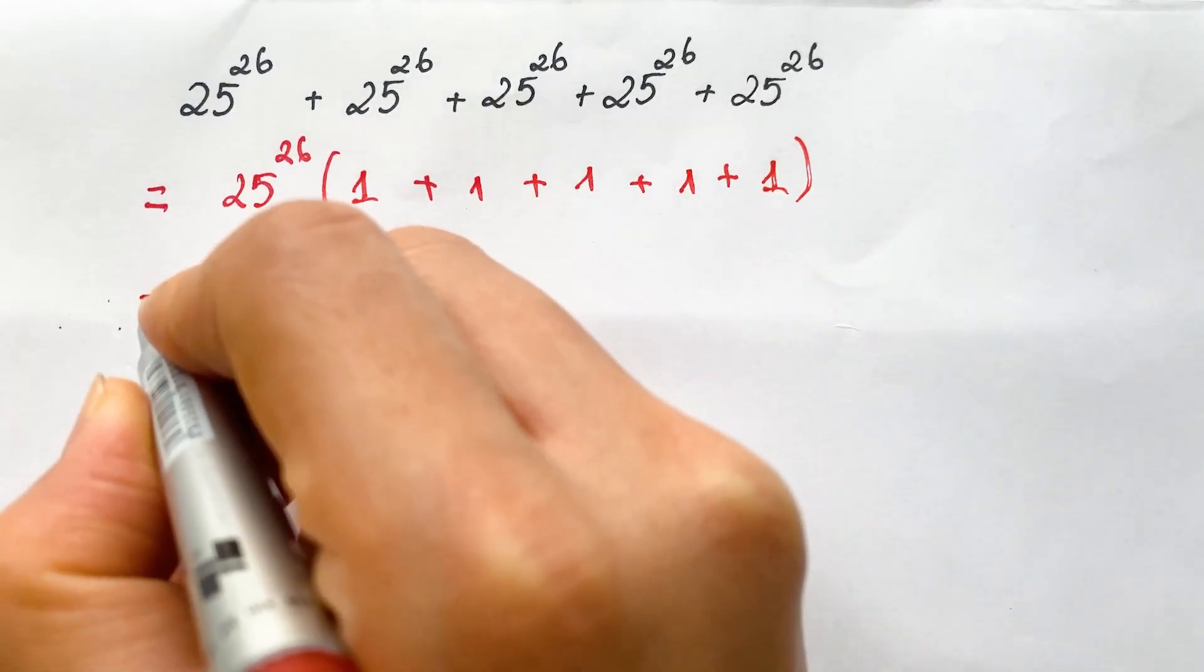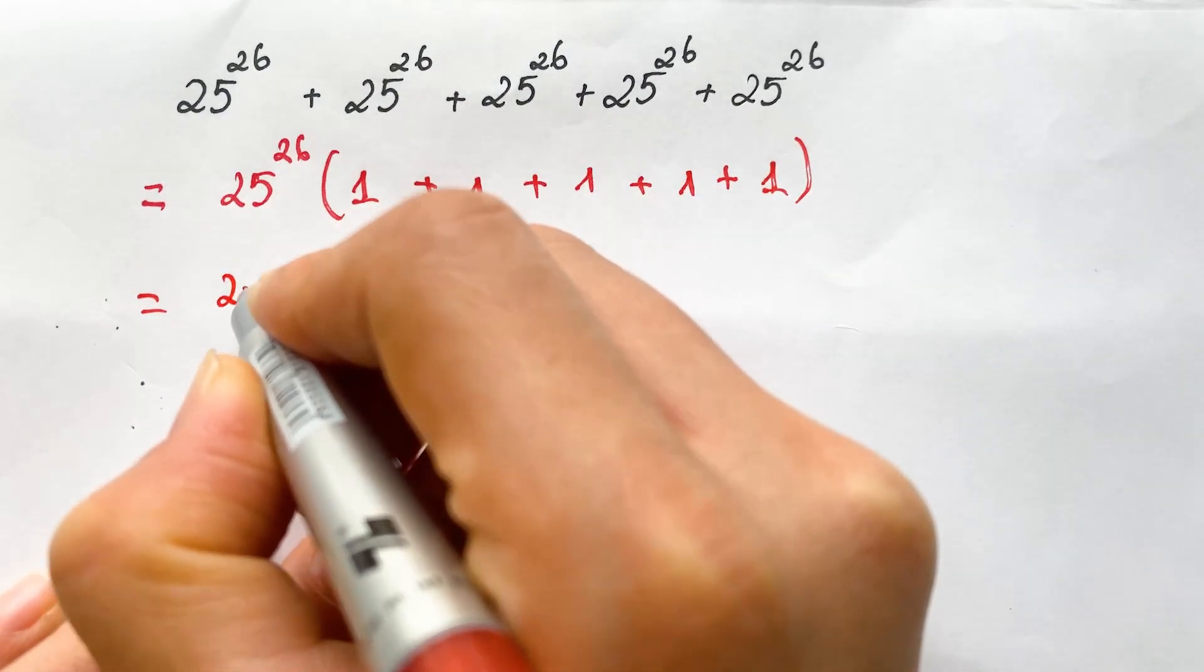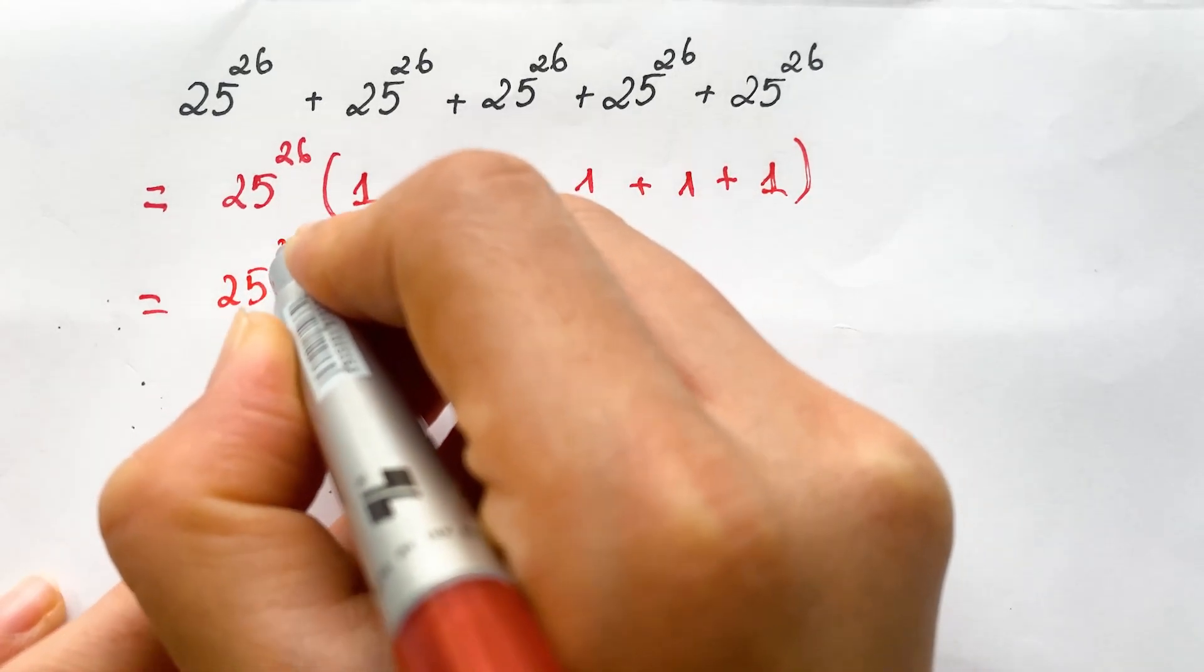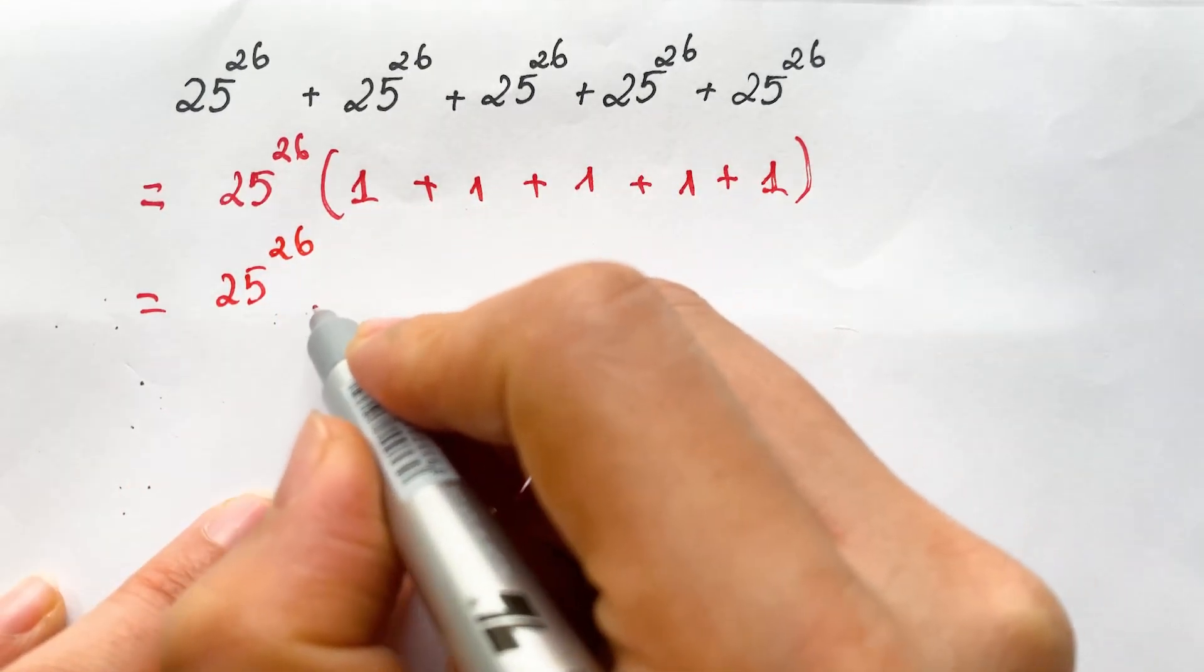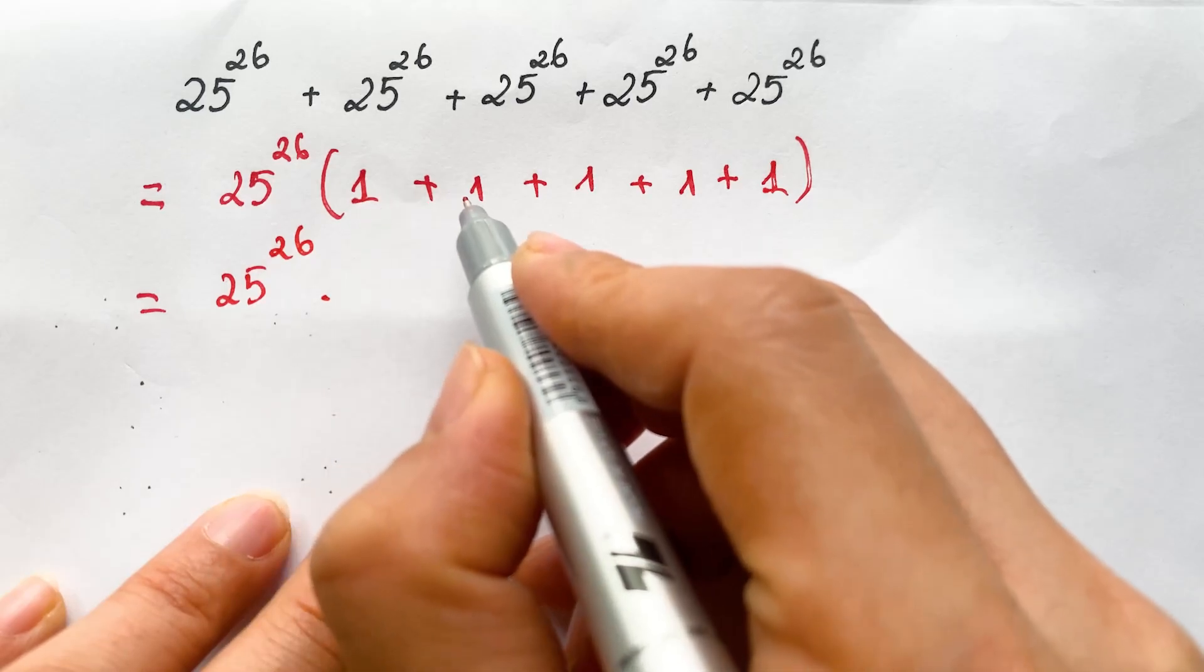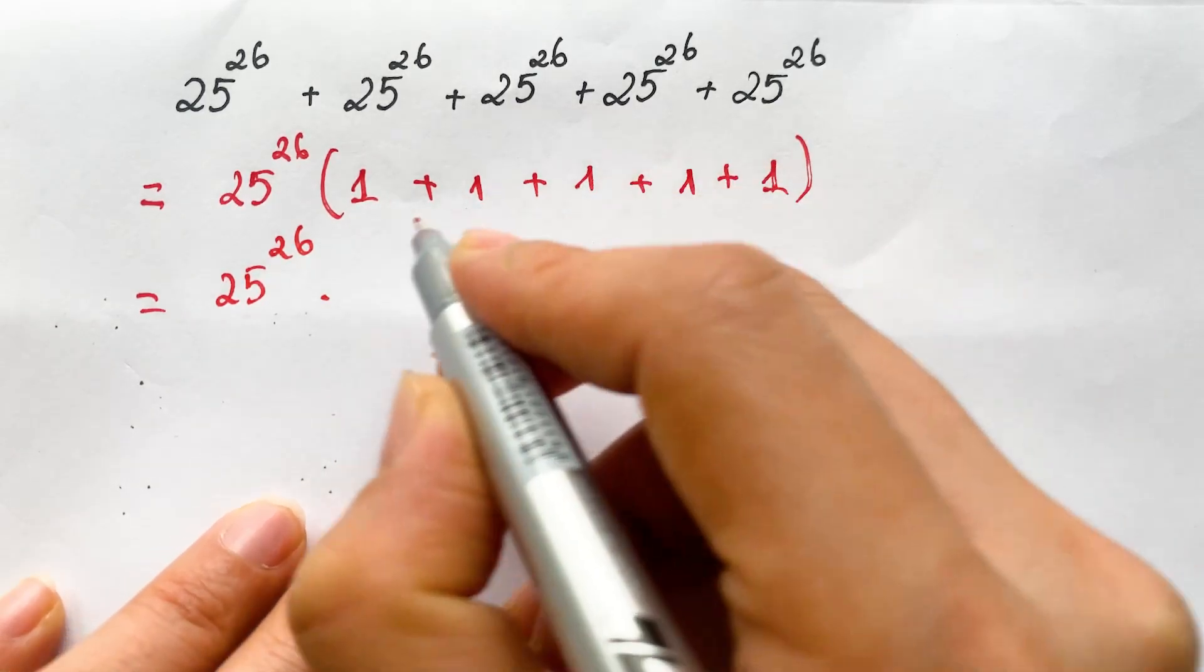So we also have 25 power 26 times 1, 2, 3, 4, and 5.